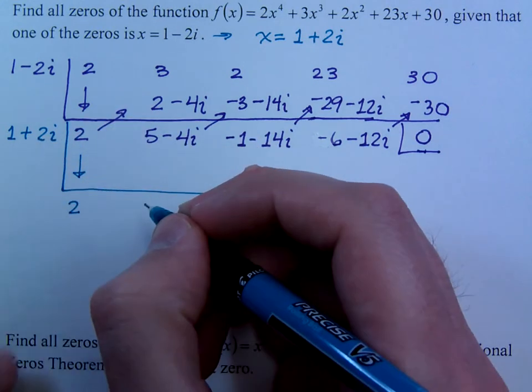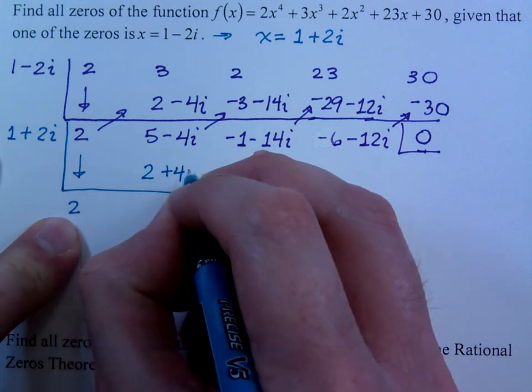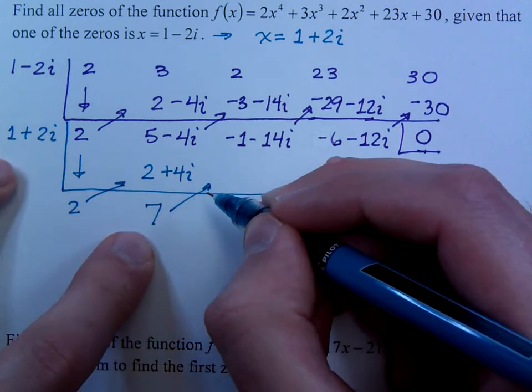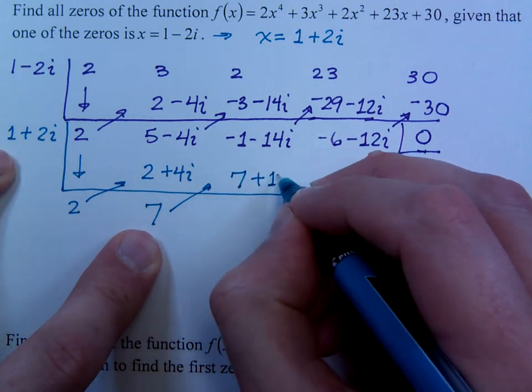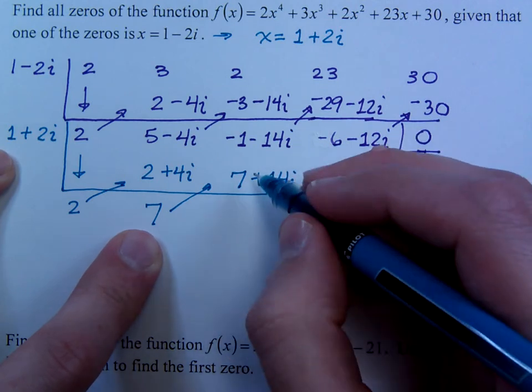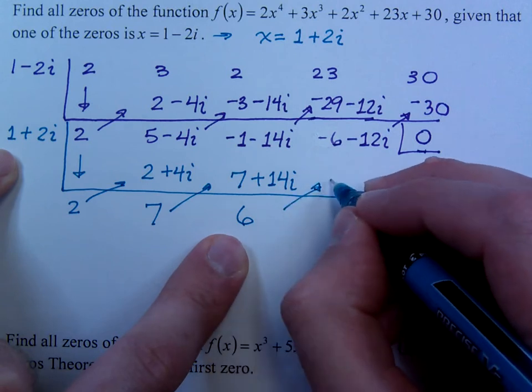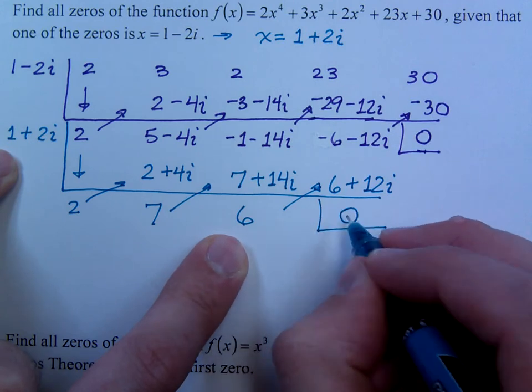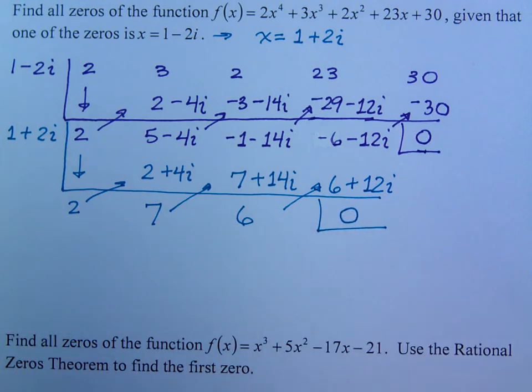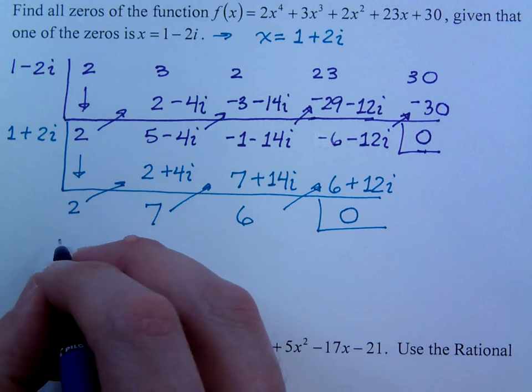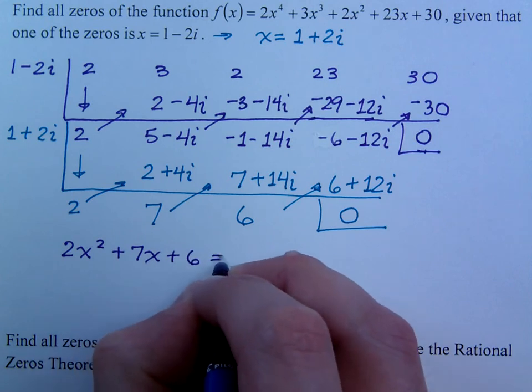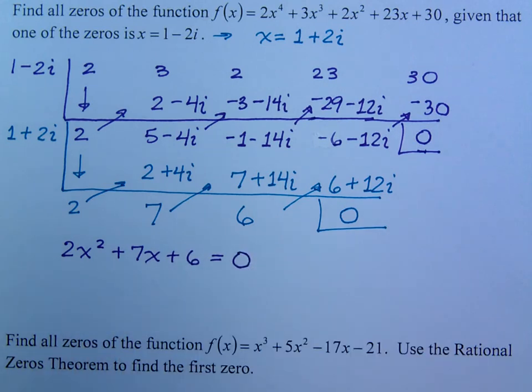So, bring down the 2, multiply, so that's 2 plus 4i, that gives me 7. Multiply here is 7 plus 14i, that gives you 6. Multiply here is 6 plus 12i, and you get a remainder of 0, which is, again, what we're supposed to have. Now, the question here is asking us to find all of the 0s of the function. We have 2, and then we're going to take this guy. 2x squared plus 7x plus 6, and we're going to set this equal to 0.